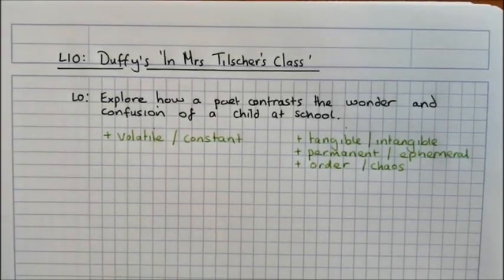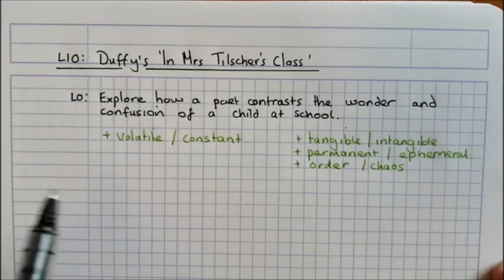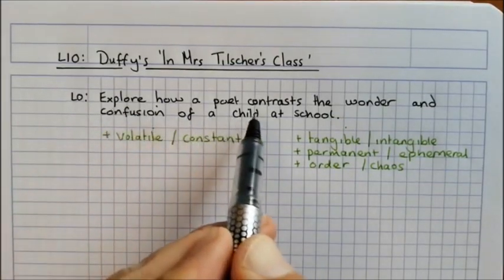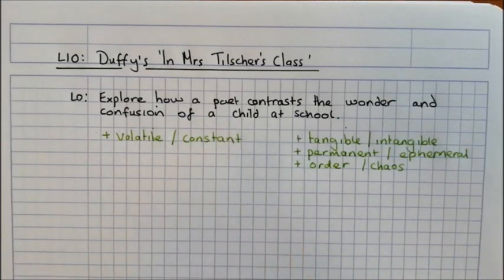Hi, so you will have read the poem In Mrs. Tilcher's Class twice now and you will have a really good idea of what the topic of each stanza is and what the focus of each stanza is. What I want to look at right now is our learning objective: explore how a poet contrasts the wonder and confusion of a child at school, so you should have noticed that within the structure of this there is a real contrast between the beginning and the end.